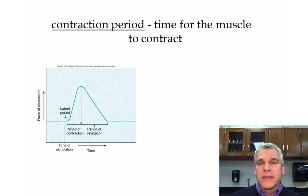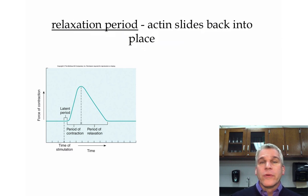When the contraction period takes place, this is how long it takes for those muscles to contract. Again, this is not a long period of time. We're measuring this in milliseconds. The myosin is pulling on the actin until the fiber is fully contracted. During the relaxation period, the actin then slides back into place. The calcium is going to be reabsorbed by the sarcoplasmic reticulum. The active site will be covered up again and the myosin will detach from the actin.